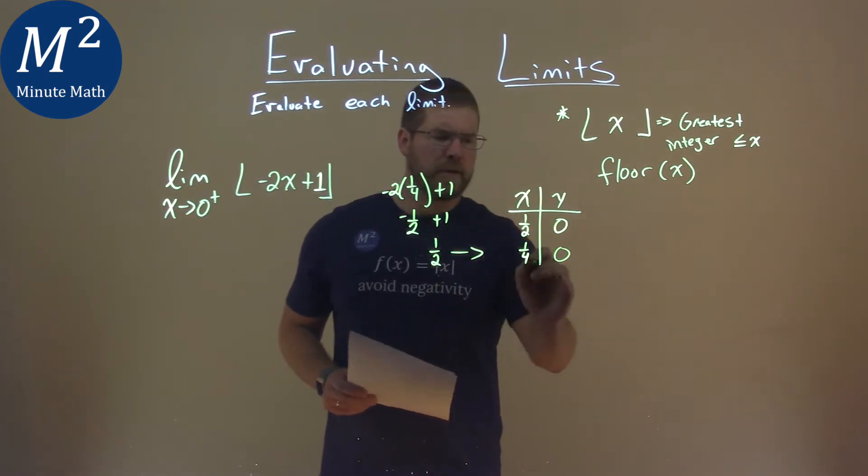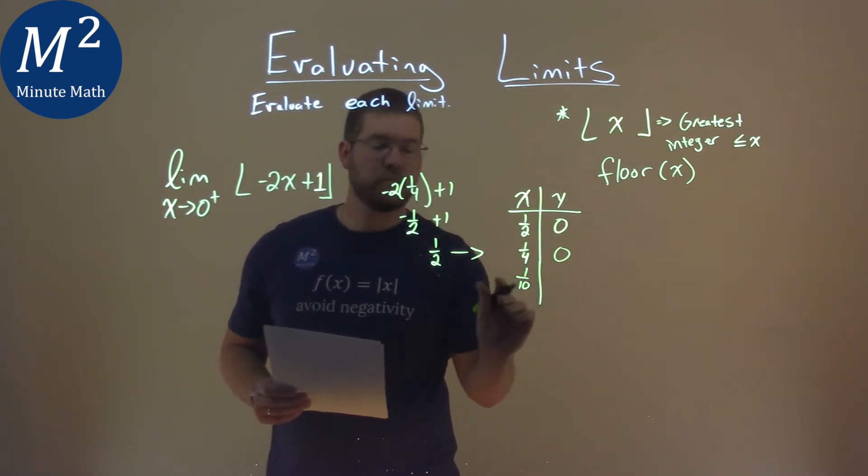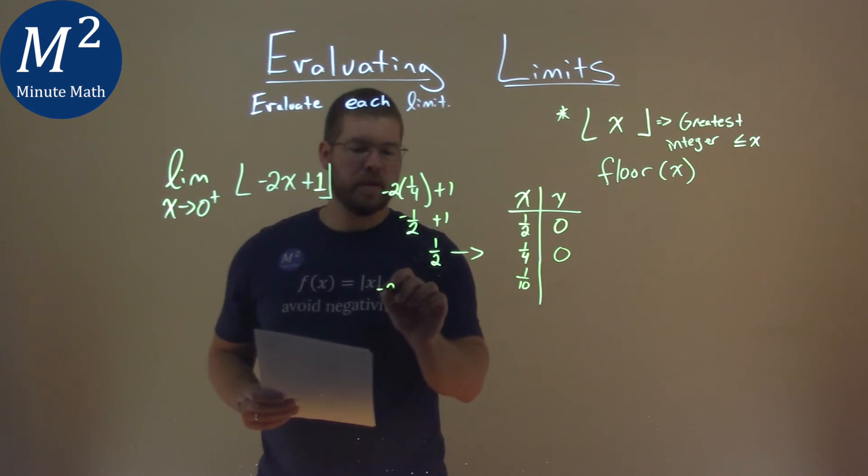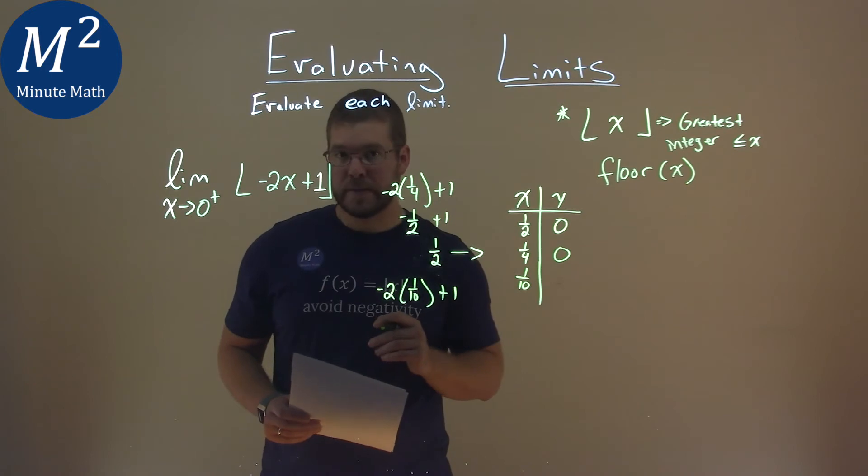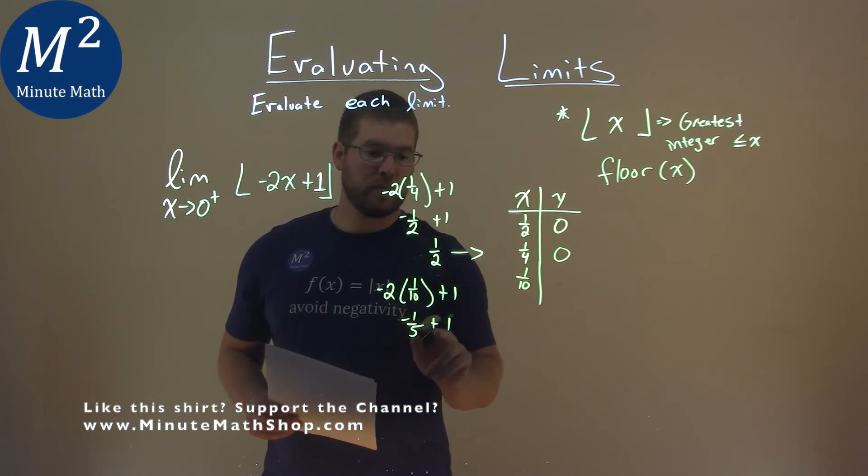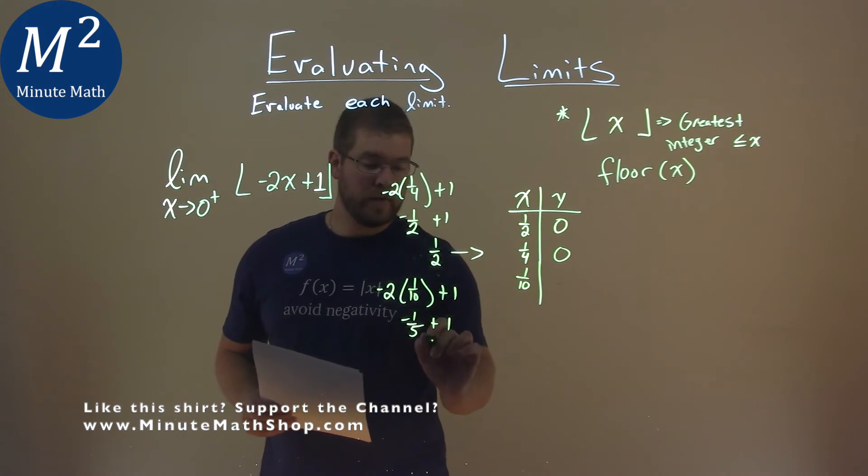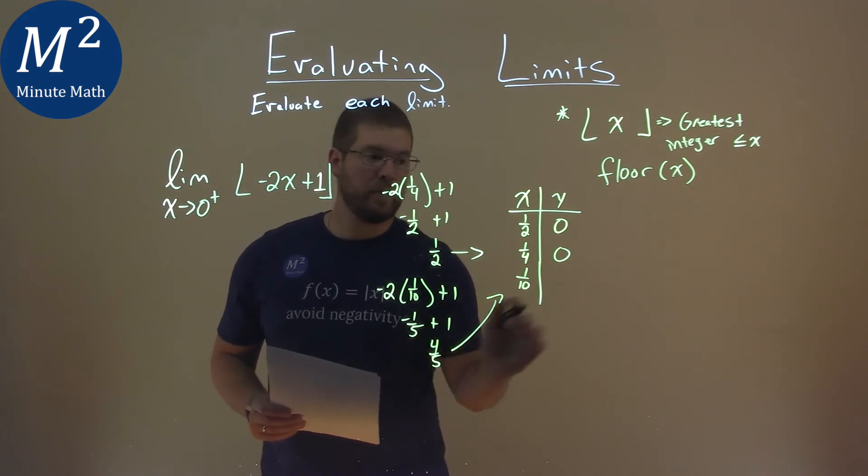Let's do another one here. Let's go one, I don't know, tenth, let's say. So put a one-tenth in as we get closer and closer to zero from the right. So negative two times a one-tenth plus one. Negative two times a one-tenth is a negative, well, that's a one-fifth, plus one. And negative one-fifth plus one comes out to be, well, negative fifth plus one plus one is a four-fifths. That's still less than one here, so the greatest integer less than or equal to four-fifths is zero.